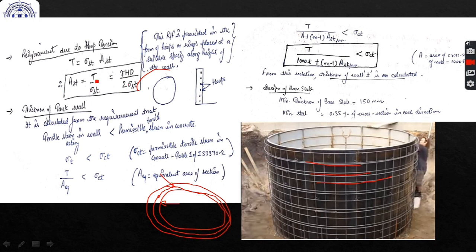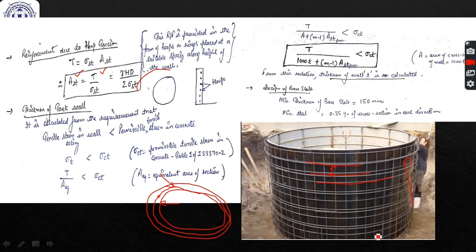After calculating Ast, we assume the diameter of bars and calculate the spacing. As we go downward, the water pressure increases, so T increases and Ast required increases. As we move upward, pressure decreases, so we can increase the spacing. The hoops are closely spaced at the bottom and more widely spaced at the top for economy.